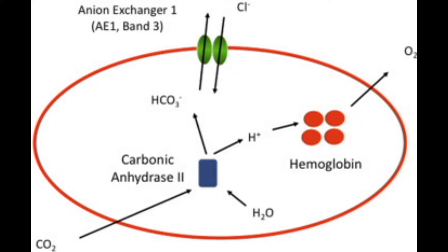Due to the movement of bicarbonate ions from the red blood cell to the interstitial fluid, there is a risk of development of positive charge in the RBC due to the retention of protons. To prevent this, protein band 3 — which transports bicarbonate ions out — also causes the entry of chloride into the cell. So we can call it a bicarbonate-chloride co-transporter. When chloride enters through protein band 3, it also draws water in. So bicarbonate ions exit the red blood cell, and their movement causes water and chloride to enter the cell. In this way, charges are maintained due to this bicarbonate-chloride shift.